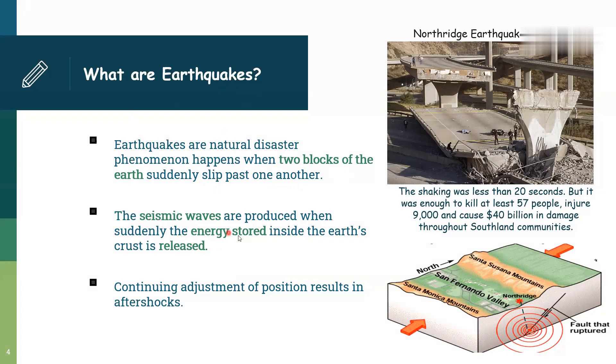The seismic waves are produced when suddenly the energy stored inside the earth's crust is released. It is about storage of energy and pressure in the earth's crust which explodes, which releases this pressure and energy to make an earthquake like Northridge earthquake in 1994 which caused deaths of 57 people, 9,000 injured and more than 40 billion dollars damages. So earthquake has direct losses and indirect losses, has economic losses and human losses.